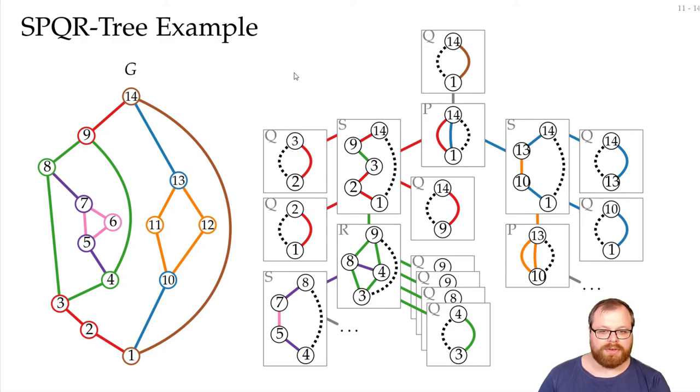What people often do, is that they omit the Q nodes. Because those are quite boring. That's just single edges. And when we want to have an algorithm for some problem. Then, we often use this SPQR tree. And we have to figure out, what do we do at S nodes. What do we do at P nodes. And what do we do at R nodes. And for our representation extension problem, we will do that in the next two parts.